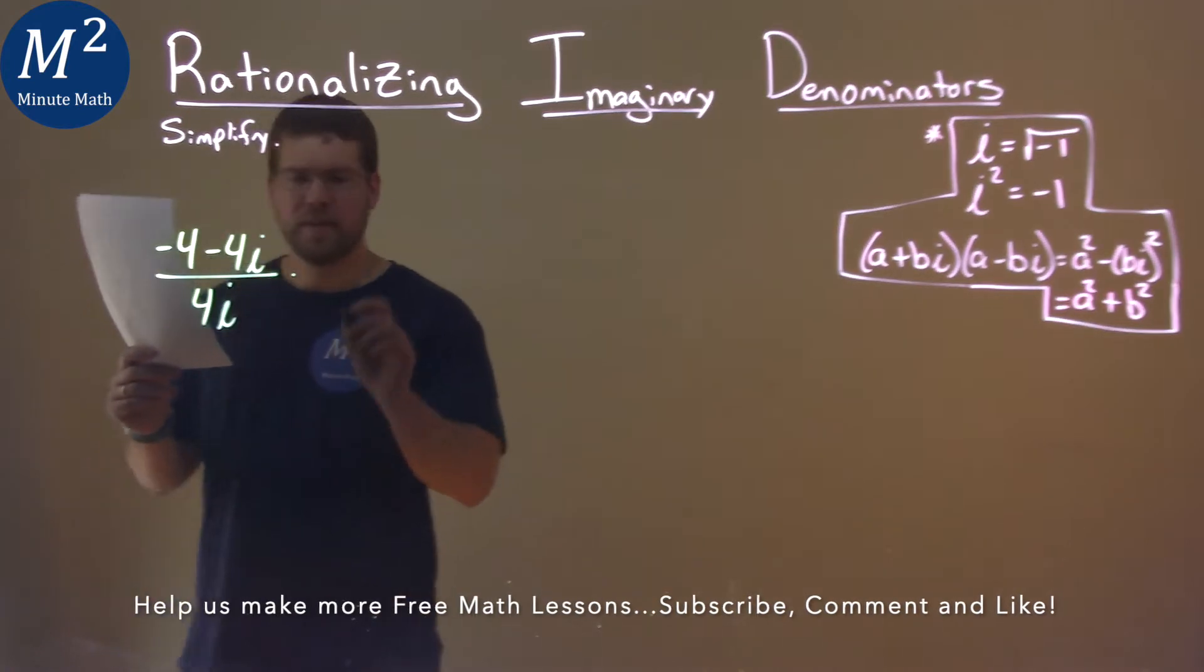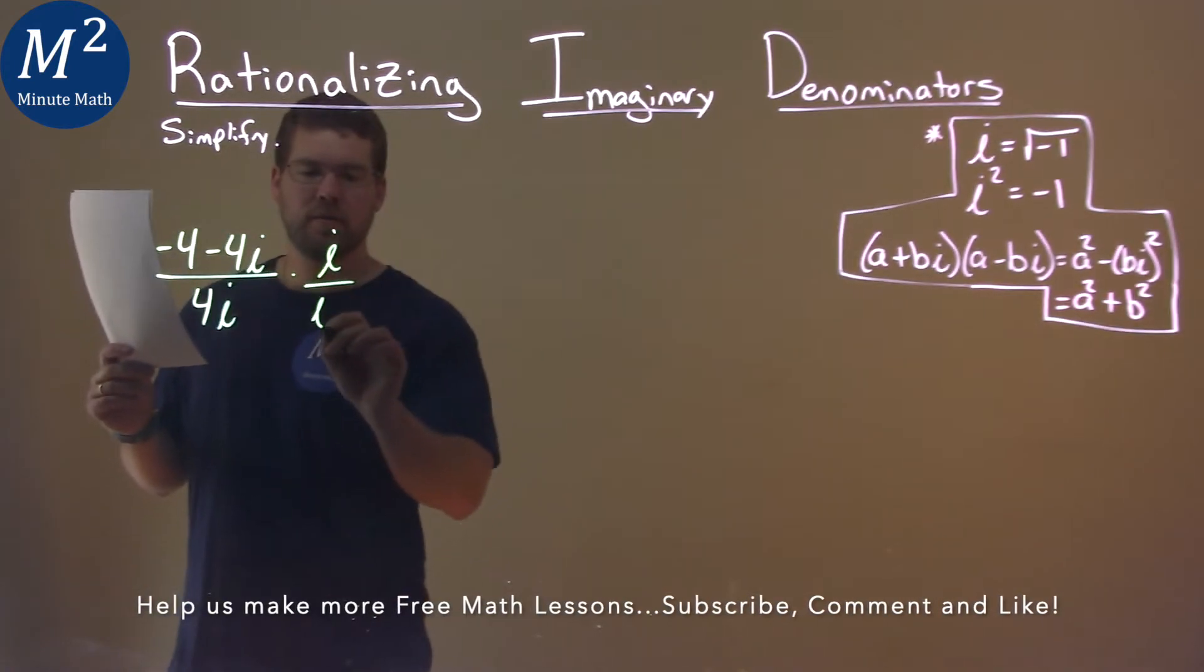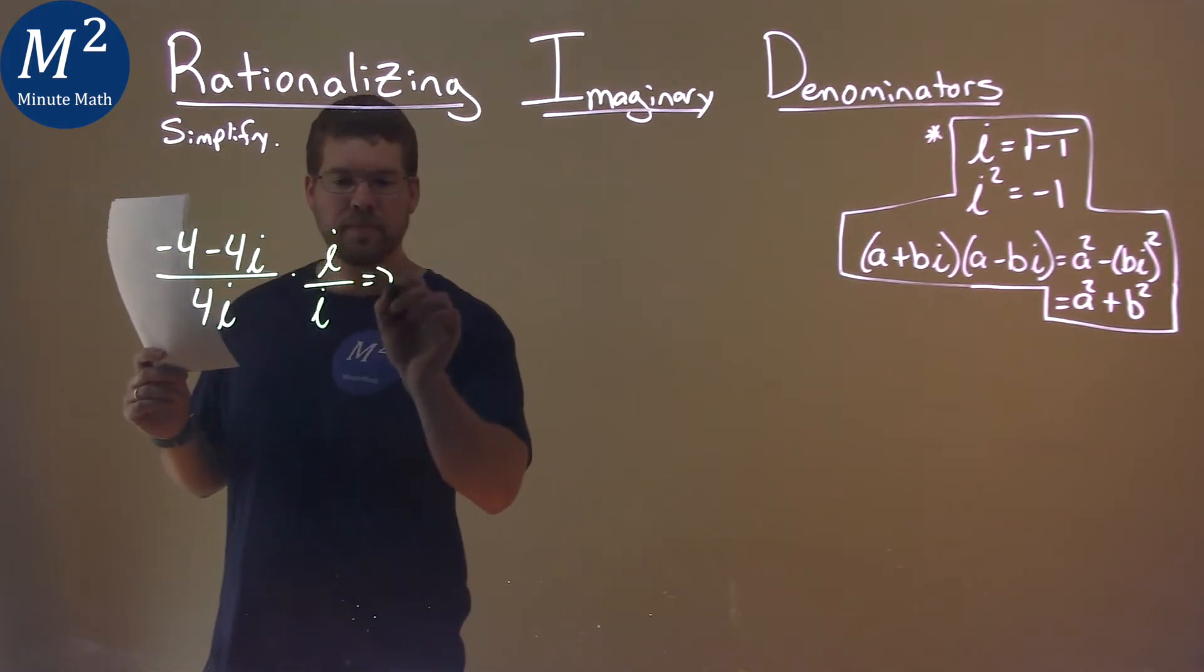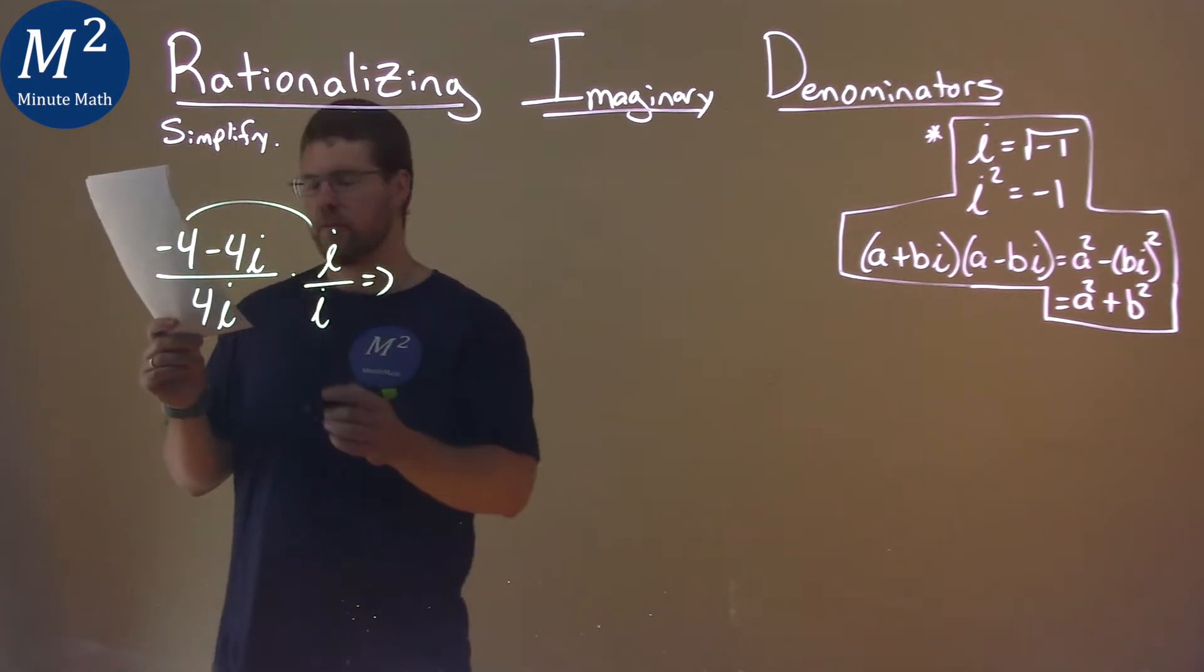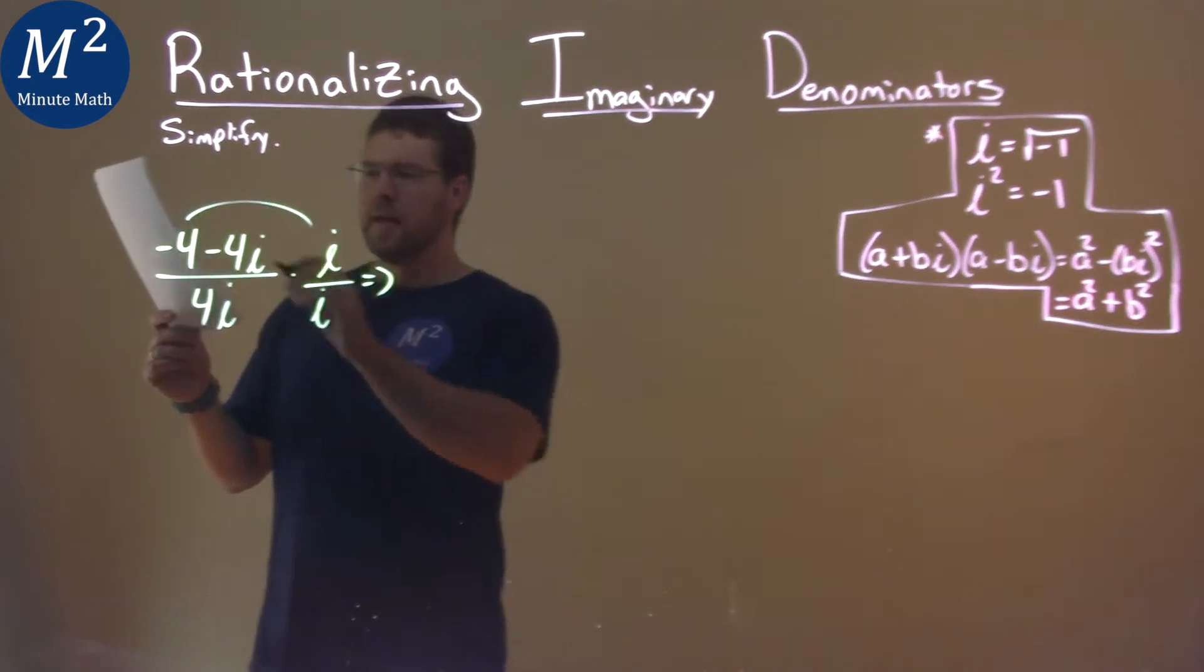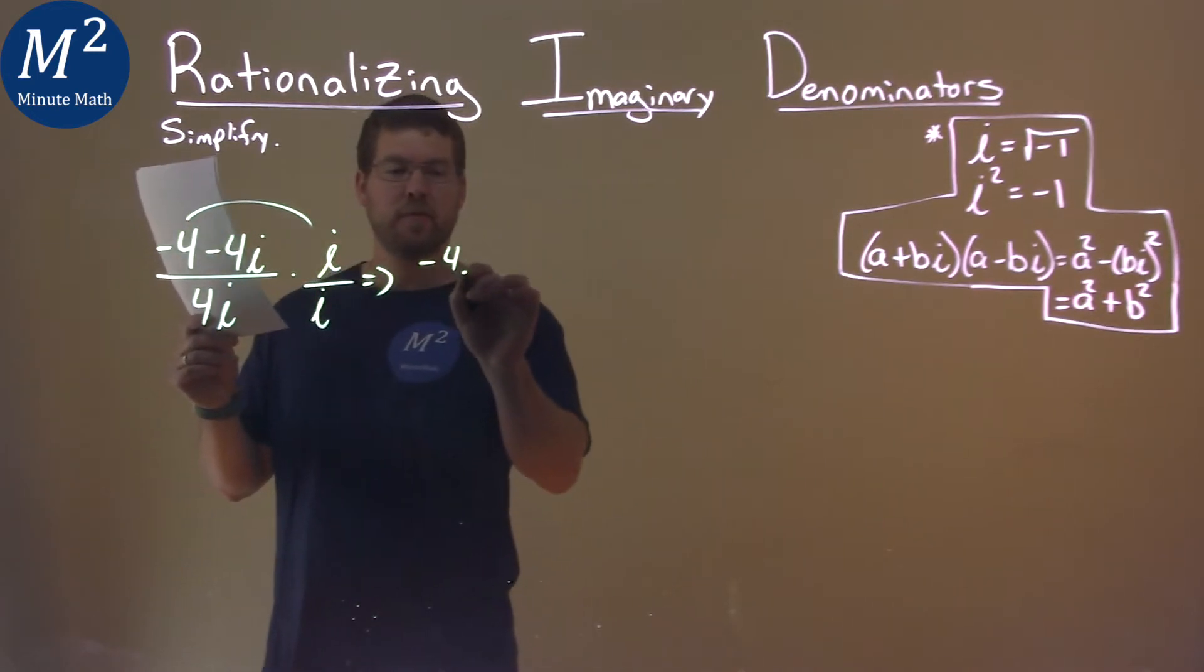What I want to do is take this and multiply it by i over i. Doing that, distribute the negative 4, or negative 4 minus 4i. Negative 4 times i is negative 4i.